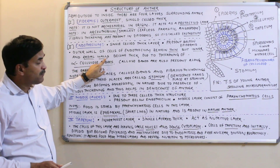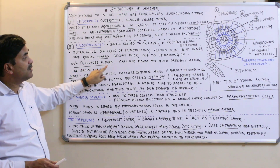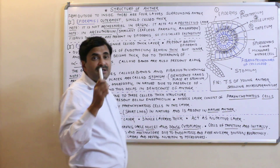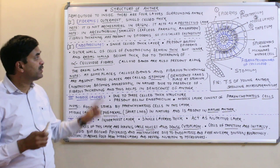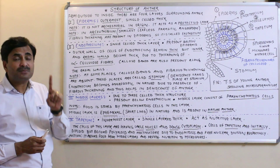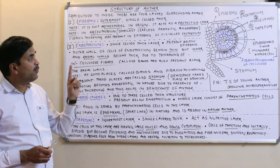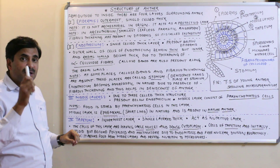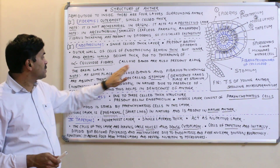The outer wall of the cells of the endothecium is thin, but the inner walls as well as the radial walls become thick due to the thickening of alpha cellulose fibers. These fibrous thickenings made of alpha cellulose are present on the radial walls and inner walls of the endothecium, but not on the outer wall. Callose bands are also present along the radial walls.